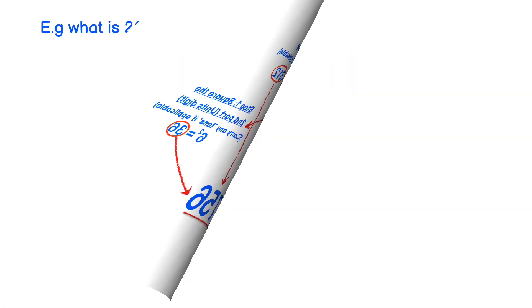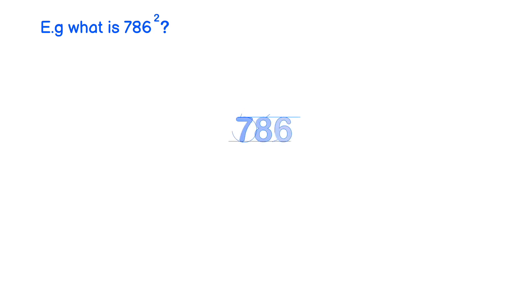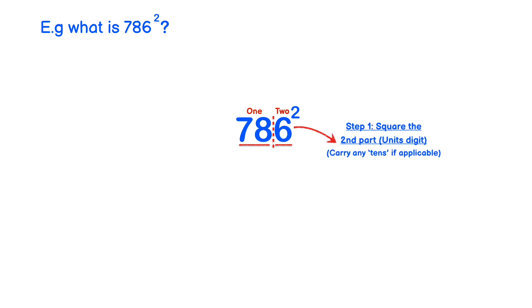Let's take a look at another example. What is 786 squared? We split 786 into two sections: 78 makes section 1 and 6 makes section 2. In step 1, we square the second part or the units digit and carry any tens if applicable. Here we have 6 again, and 6 squared equals 36. So we put the 6 in the answer line and we carry the 3.